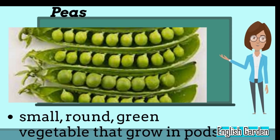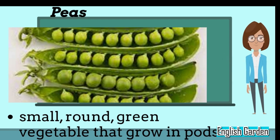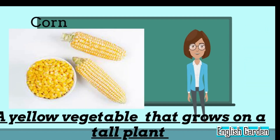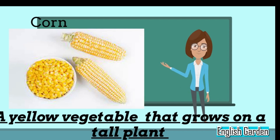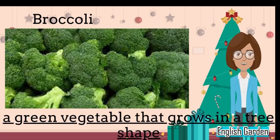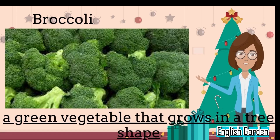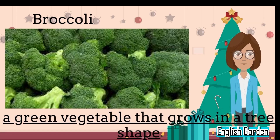Peas, small, round, green vegetables that grow in pods. Corn, a yellow vegetable that grows on a tall plant. Broccoli, a green vegetable that grows in a tree shape.